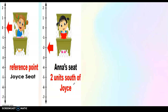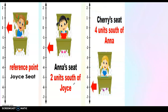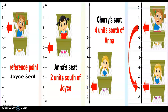When you say south, it's below zero, which represents negative two. Then from Cherry's seat, four units south of Anna. So if this is Anna, Cherry's seat is four units south of Anna, so it's here. The answer is six units south from zero — that's the distance from Joyce to Cherry, or we represent that as negative six.